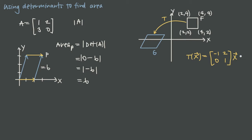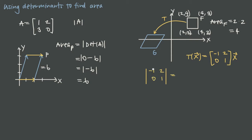We now have everything we need. The area of F is 2 times 2 equals 4, since the square is 2 units wide (from x=2 to x=4) and 2 units tall (from y=2 to y=4). The determinant of the transformation matrix is negative 1 times 1 minus 2 times 0, which equals negative 1.